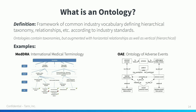An ontology is a framework of common industry vocabulary. It typically contains a taxonomic structure of entities as well as the relationships that may exist between entity types. Taxonomies differ from ontologies in that a taxonomy contains only vertical relationships between tiers, whereas an ontology contains those vertical relationships but also horizontal ones between separate branches. A couple of examples in the life sciences sector are MedDRA and OAE, which describe medical conditions, disorders, and adverse events associated with clinical and drug trials. While ontologies are most often associated with life sciences, they exist across a much wider spectrum of use cases.